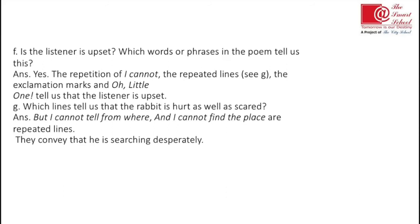Number f: the listener is upset — which words or phrases in the poem tell us this? The child was trying to find the rabbit and was upset because of the cry the rabbit made. The answer is: yes, the repetition of 'I cannot,' the repeated lines, the exclamation marks — all tell us the listener is upset. He was unable to find the rabbit, so we can understand the child was very upset.